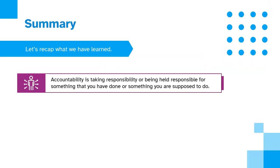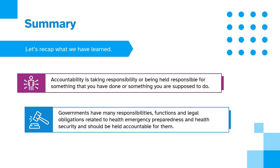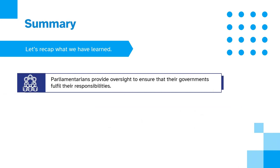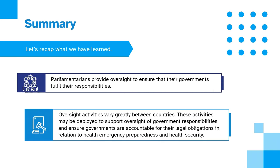Let's recap what we have learned. Accountability is taking responsibility or being held responsible for something that you have done or something that you are supposed to do. Governments have many responsibilities, functions and legal obligations related to health emergency preparedness and health security and should be held accountable for them. Parliaments provide oversight to ensure that their governments fulfil their responsibilities. Oversight actions vary greatly between countries. These activities may be deployed to support oversight of government responsibilities and ensure governments are accountable for their legal obligations in relation to health emergency preparedness and health security.